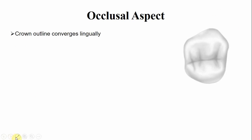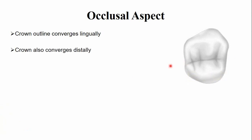From the occlusal aspect, the crown converges towards the lingual side, so the mesiodistal width from the buccal side is greater than from the lingual side. In addition to lingual convergence, the crown also converges on the distal side, meaning the buccolingual dimensions on the distal side are less compared to those on the mesial side.